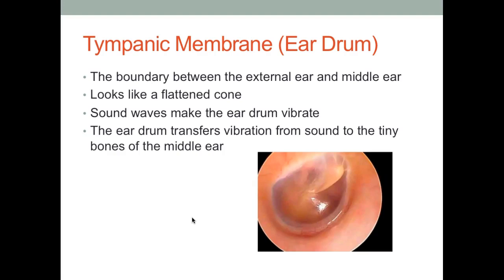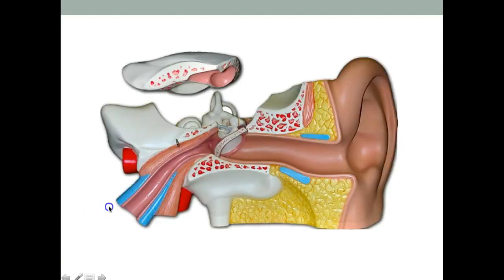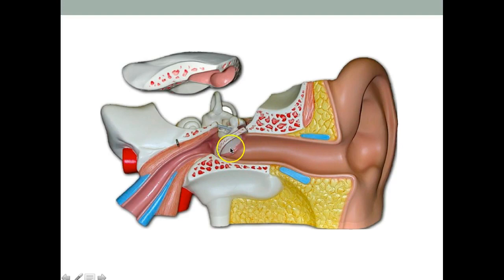The next structure is the tympanic membrane, or the eardrum. The tympanic membrane creates the boundary between the external ear and the middle ear. It looks like a flattened cone. The sound waves that come into your ear make the eardrum vibrate, and the eardrum transfers this vibration to the middle ear by the ossicles. Sound waves are collected by the auricle, move into the external auditory canal, hit the tympanic membrane causing it to vibrate, and this vibration is carried to the middle ear.